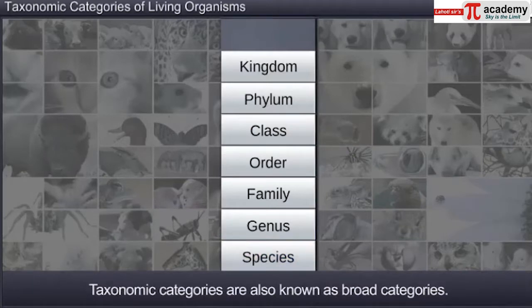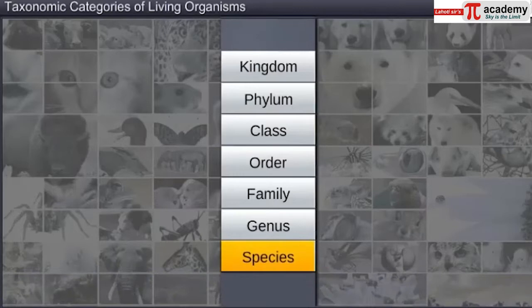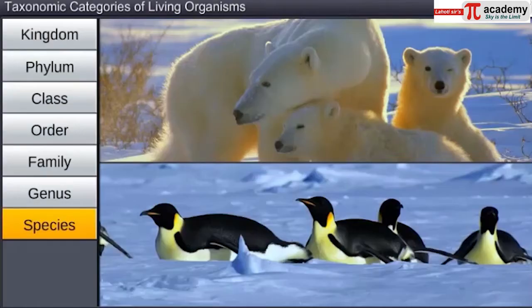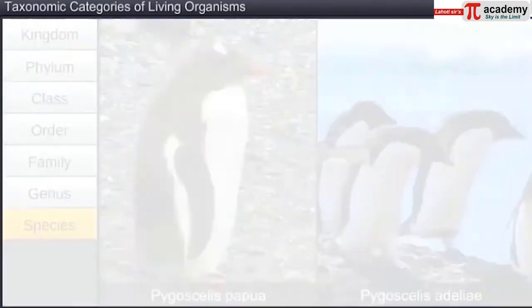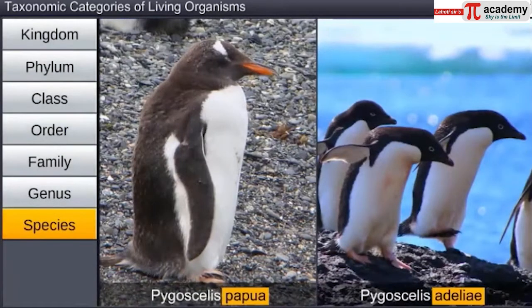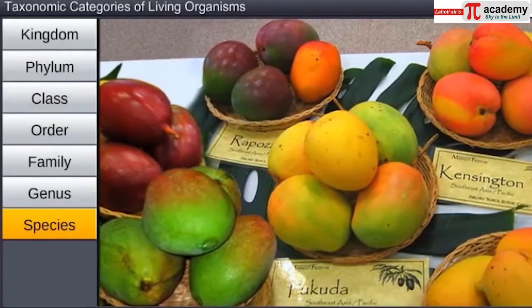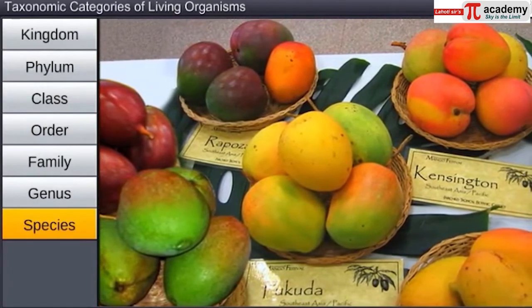These taxonomic categories are also known as broad categories. Species is the basic rank in a taxonomic category — it is a group of individual organisms with fundamental similarities. You can distinguish one species from another closely related species based on morphological characters. Think of the varieties of mangoes available in the market.